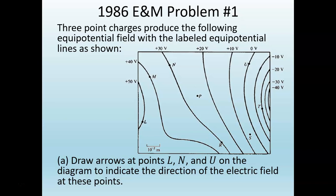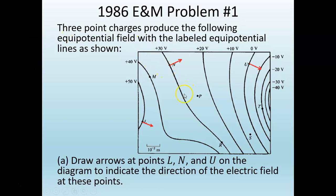draw arrows at points L, N, and U to indicate the direction of the electric field at these points. There's point L, there's point N, and there's point U. Here is the result of doing that. Notice a number of things about these arrows.